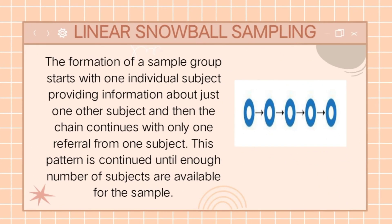Linear Snowball Sampling: The formation of a sample group starts with one individual subject, providing information about just one other subject. The chain continues with only one referral from one subject, and this pattern is continued until enough number of subjects are available for the sample.